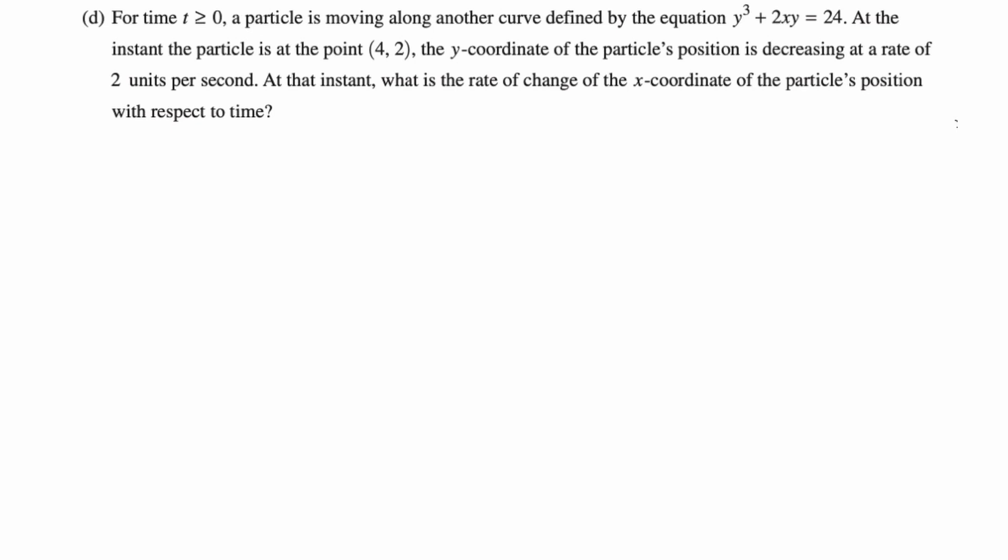A particle is moving along another curve defined by the equation y cubed plus 2xy equals 24. At the instant the particle is at (4, 2), the y-coordinate of the particle's position is decreasing at a rate of 2 units per second. So decreasing is negative 2 units per second. At that instant, what is the rate of change of the x-coordinate of the particle's position with respect to time? So this is actually like a related rates question.